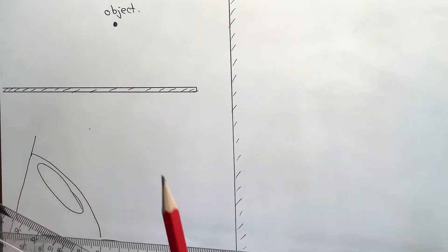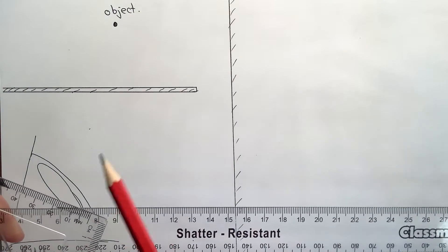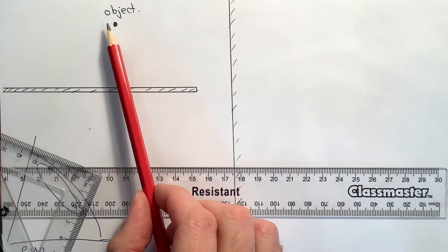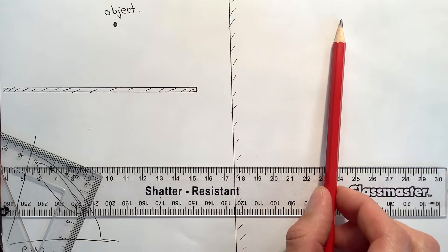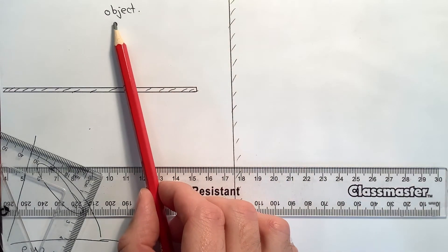So for this quick method, which I sometimes call the cheat method, we're going to use the idea that we know what the answer is already—that the image is going to be the same distance behind the mirror as the object is in front.